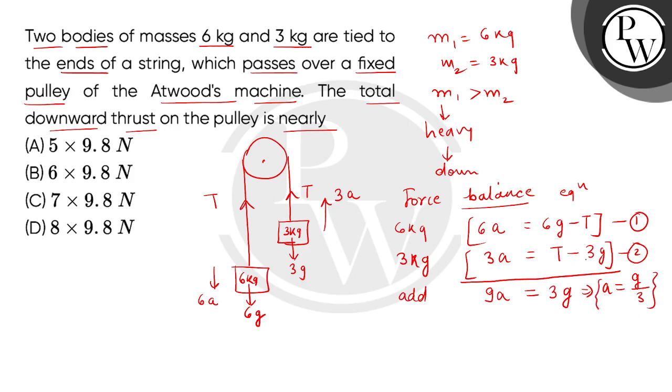Now let's put this A value in equation 2. We will get T equals to 3 times A plus G. This is 3 times G by 3 plus G, which gives us 4G.